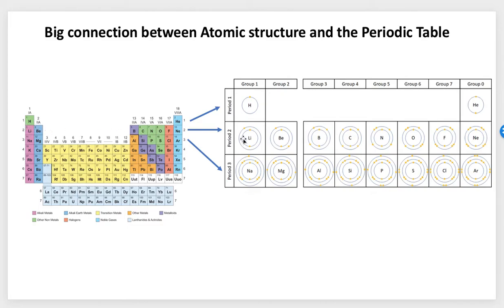And the third has three shells. After that, it gets a bit more complicated, but that's really the big connection between atomic structure and the periodic table. That's really useful to keep in mind.